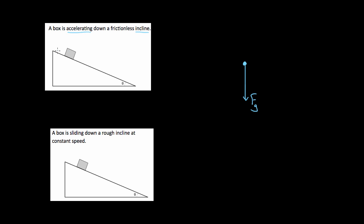What about an incline? A box is accelerating down a frictionless incline. Gravity is always straight down — you never change gravity's direction regardless of the incline angle. The normal force is perpendicular to the inclined surface, pointing away from the ramp. There's no friction since the incline is frictionless. These two forces are not balanced; the net force points down the ramp. The perpendicular components cancel — the box doesn't fly off the incline — and it accelerates down the ramp.